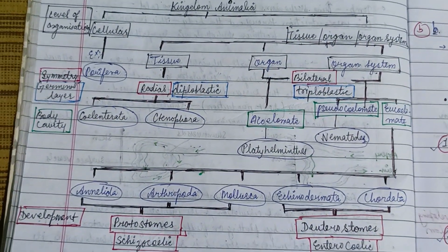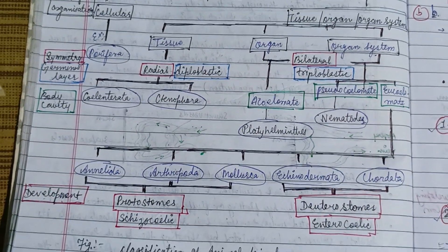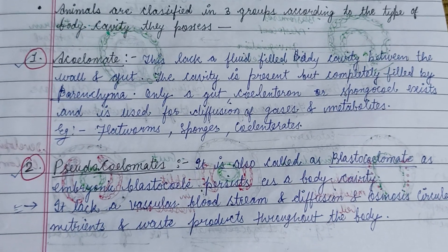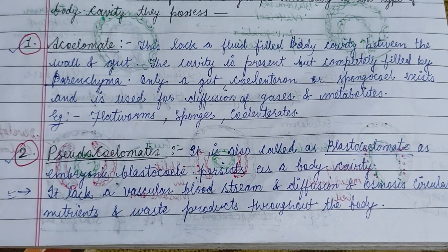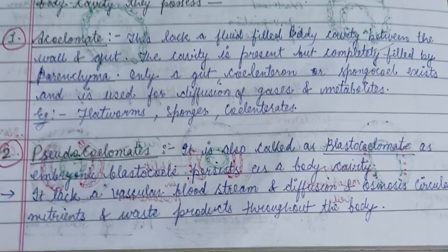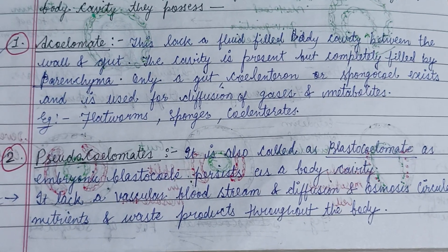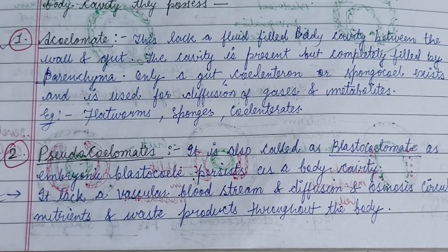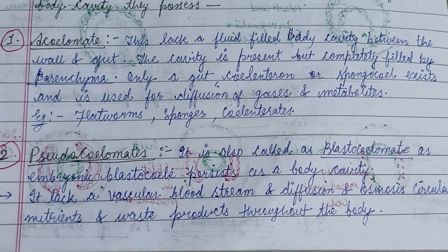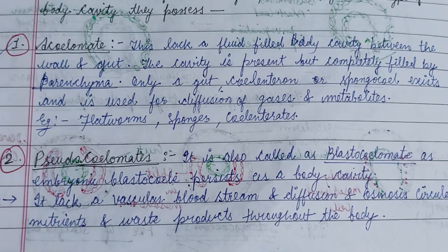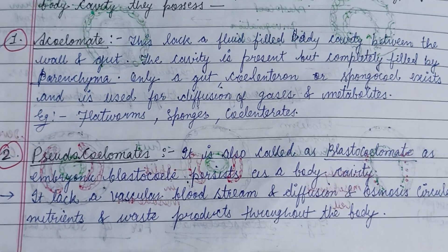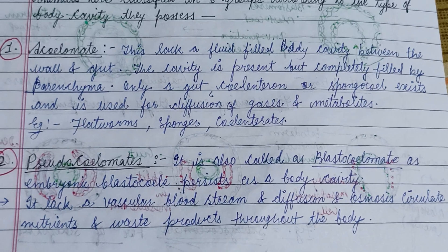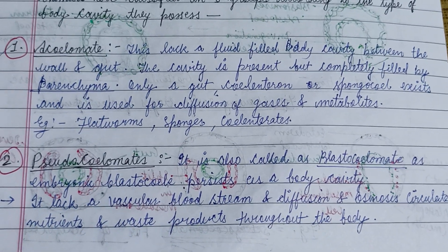The coelom is classified on the basis of level of organization, symmetry, germinal layer, body cavity, and development. Based on the type of body cavity, animals are divided into acoelomates, pseudocoelomates, and eucoelomates. In acoelomates, there is a complete absence of body cavity between the wall and the gut. In pseudocoelomates, it persists as a pouch-like body cavity, lacking a vascular system, so diffusion and osmosis circulate nutrients and waste products throughout the body.